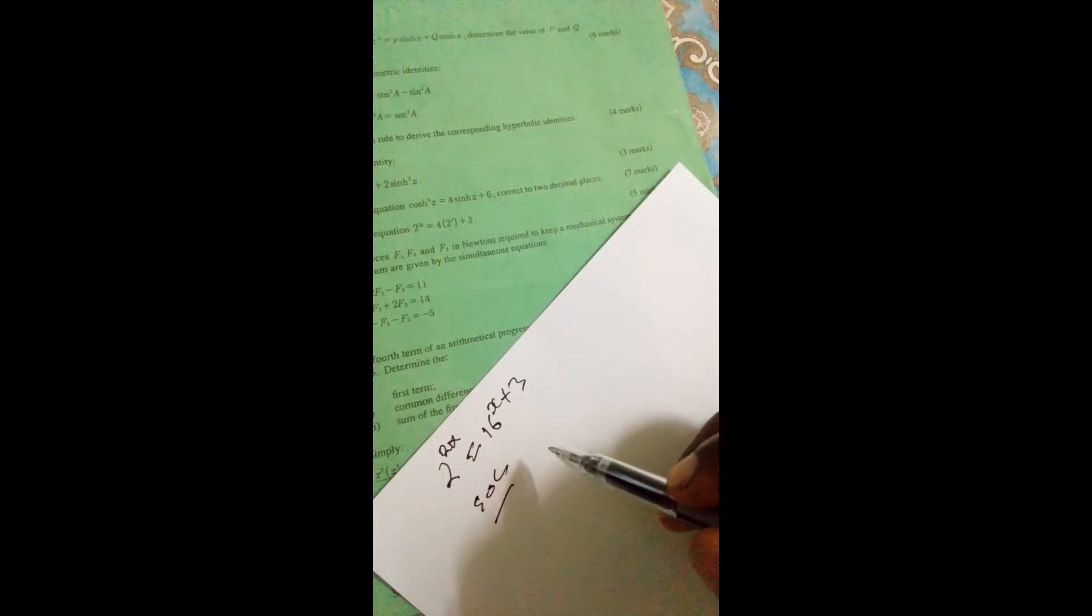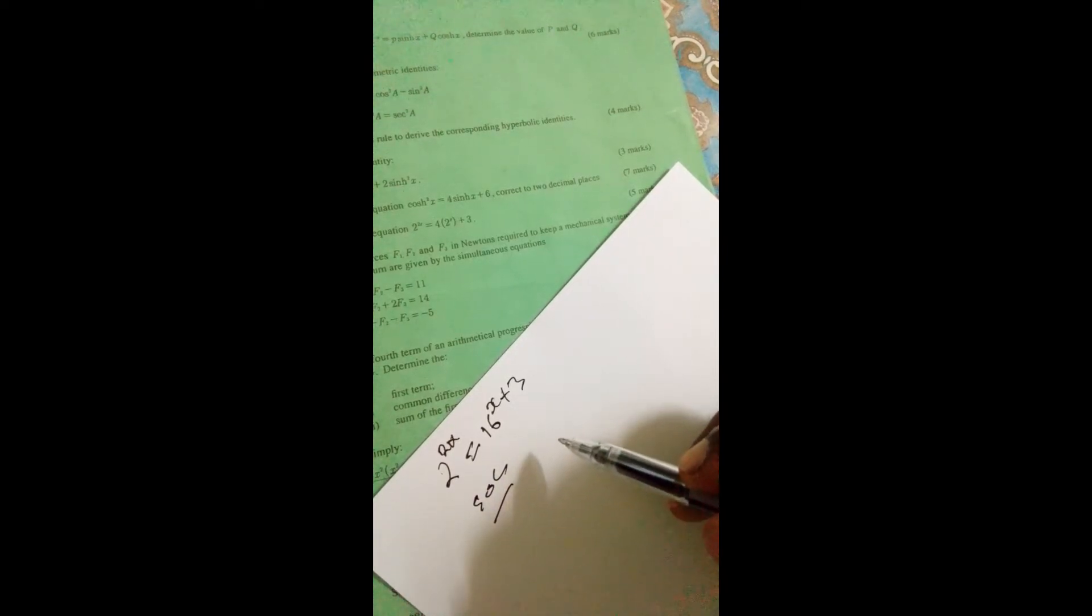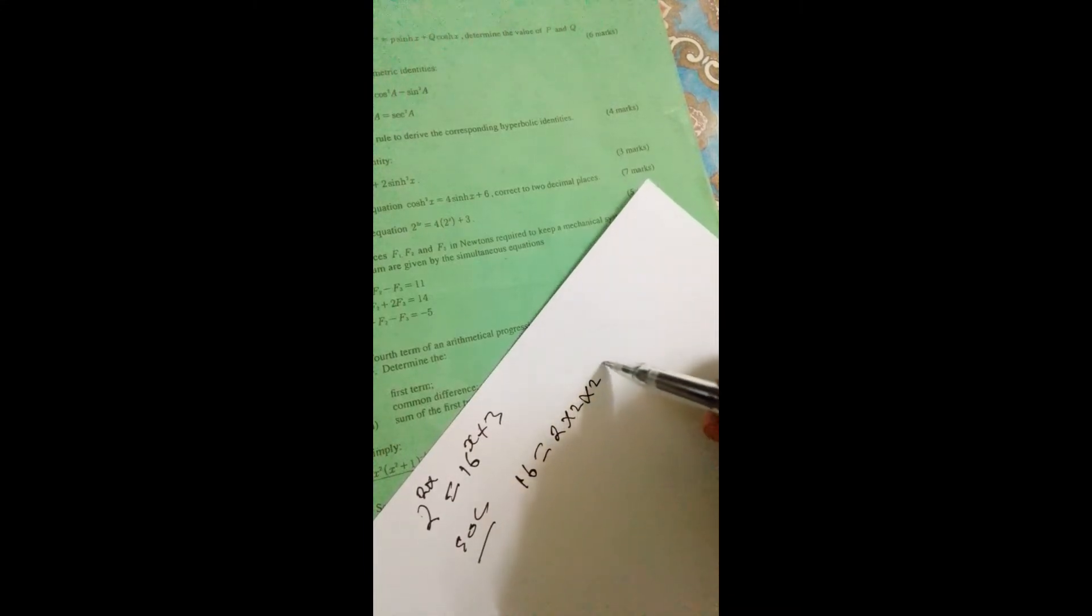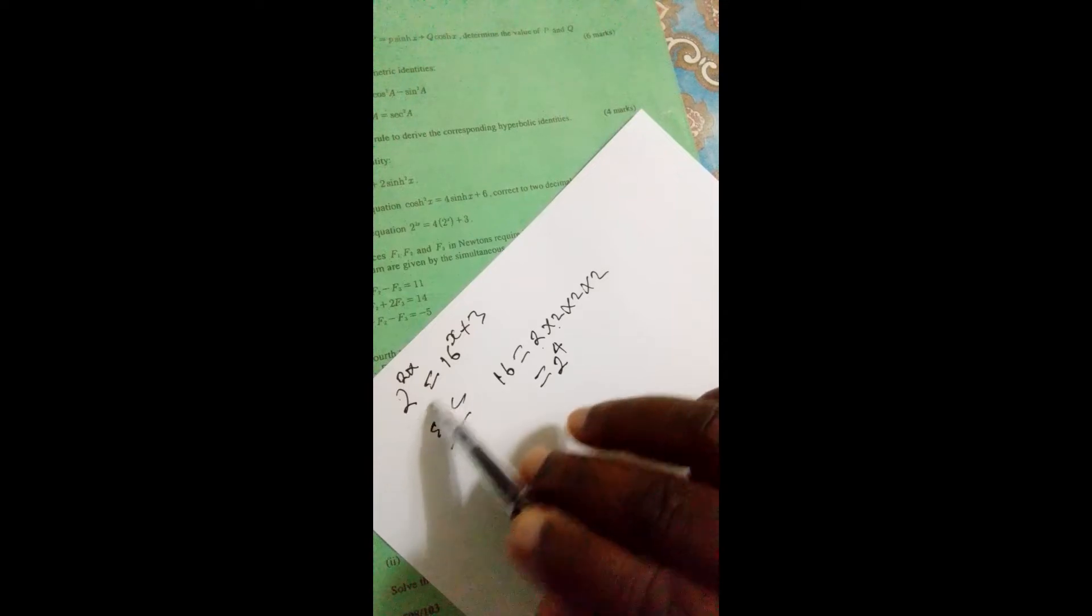For the solution, we can express 16 using its factors. 16 is the same as 2 times 2 times 2 times 2, so 16 equals 2 raised to 4.